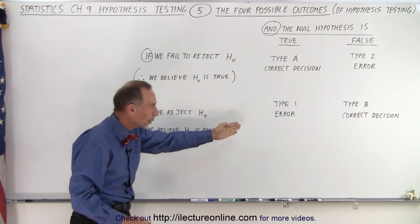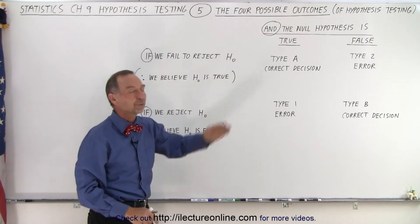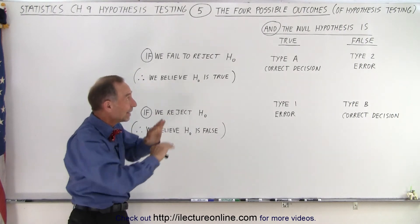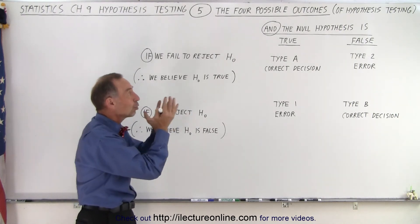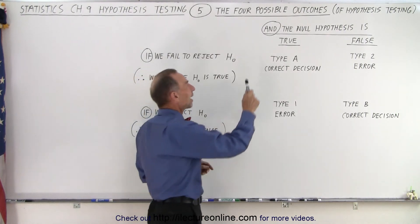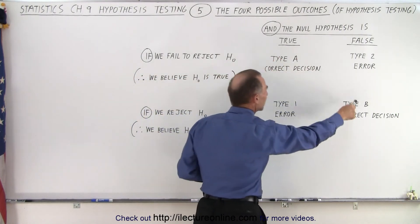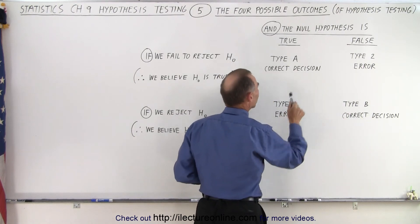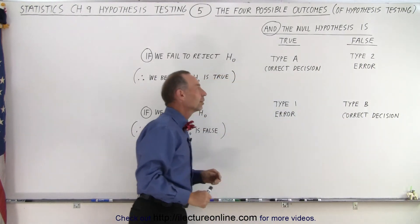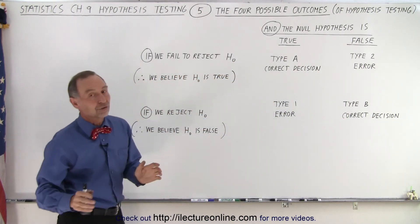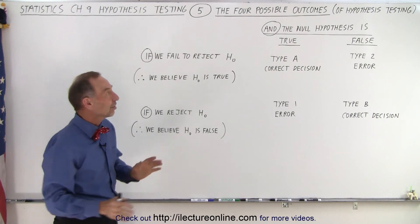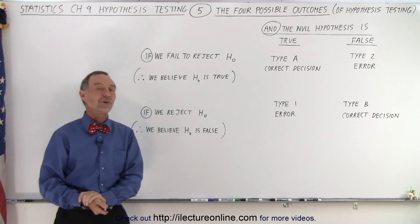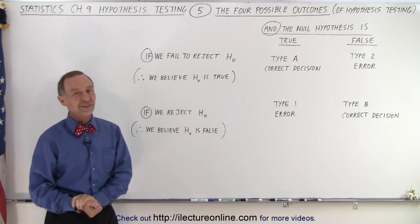And so, we call that type 1 or type 2 errors. And those are the four possible outcomes, and this is how we normally look at them. So, we have type A and type B correct decisions, we have type 1 and type 2 errors. And that is how we have the four possible outcomes when we do hypothesis testing.